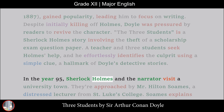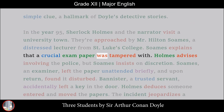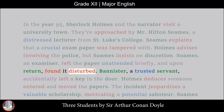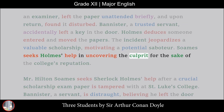In the year 1895, Sherlock Holmes and the narrator visit a university town. They are approached by Mr. Hilton Soames, a distressed lecturer from St. Luke's College. Soames explains that a crucial exam paper was tampered with. Holmes advises involving the police, but Soames insists on discretion. Soames, an examiner, left the paper unattended briefly, and upon return found it disturbed. Bannister, a trusted servant, accidentally left a key in the door. Soames deduces someone entered and moved the papers, jeopardizing a valuable scholarship, motivating a potential saboteur. Soames seeks Holmes' help in uncovering the culprit.